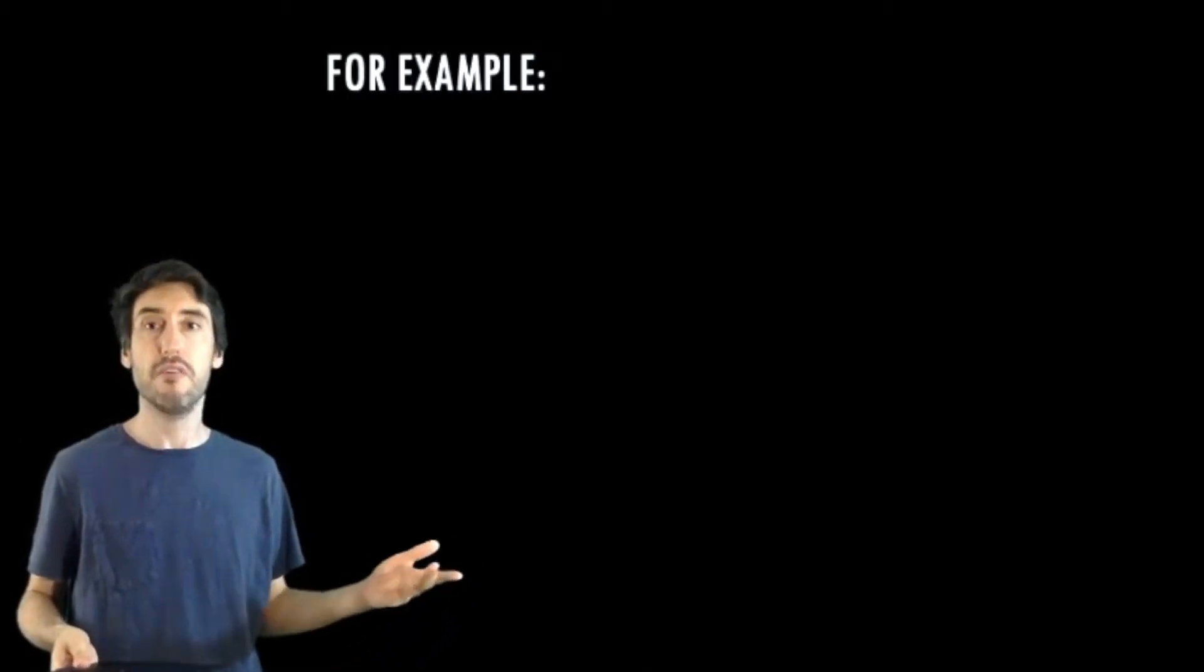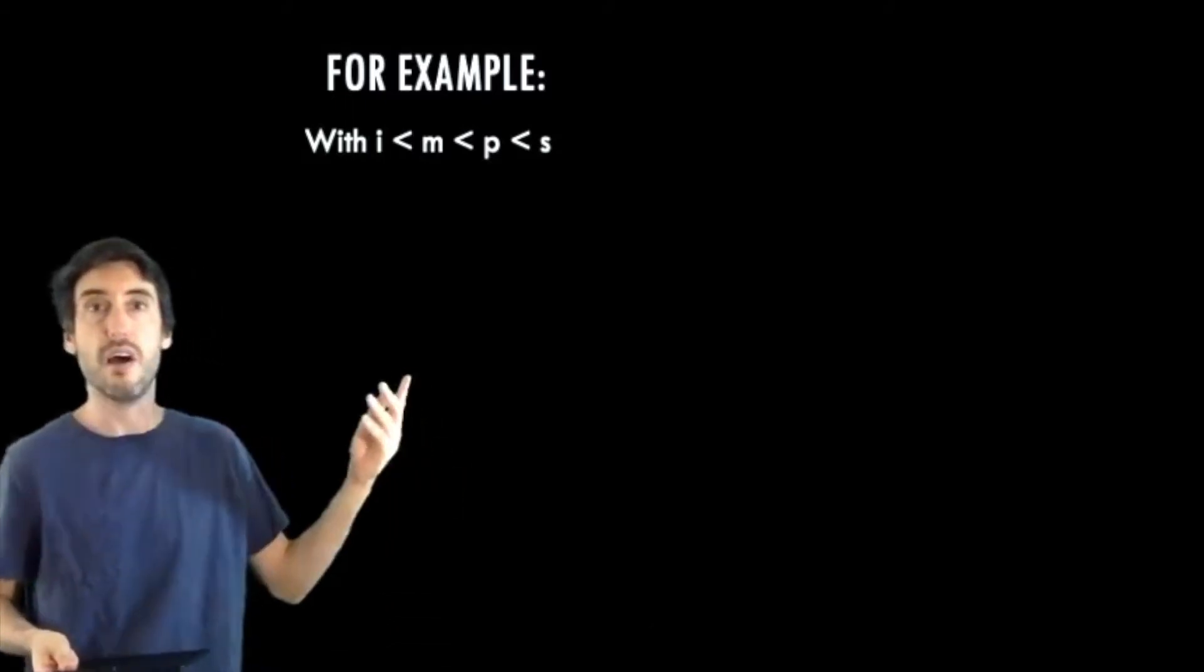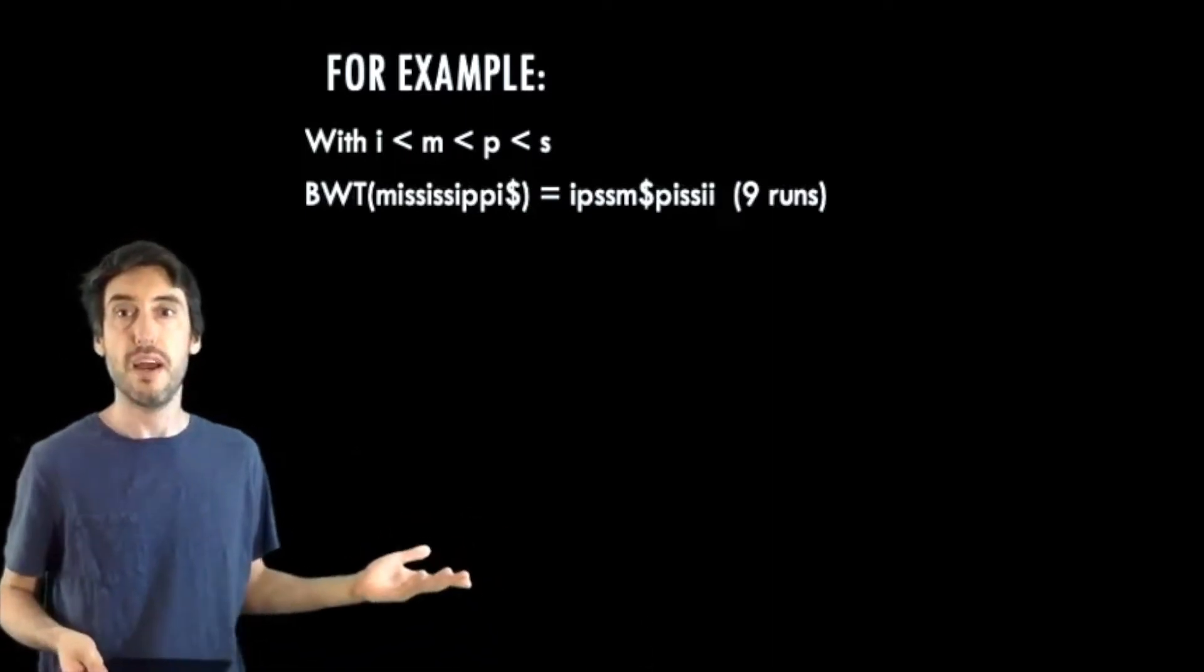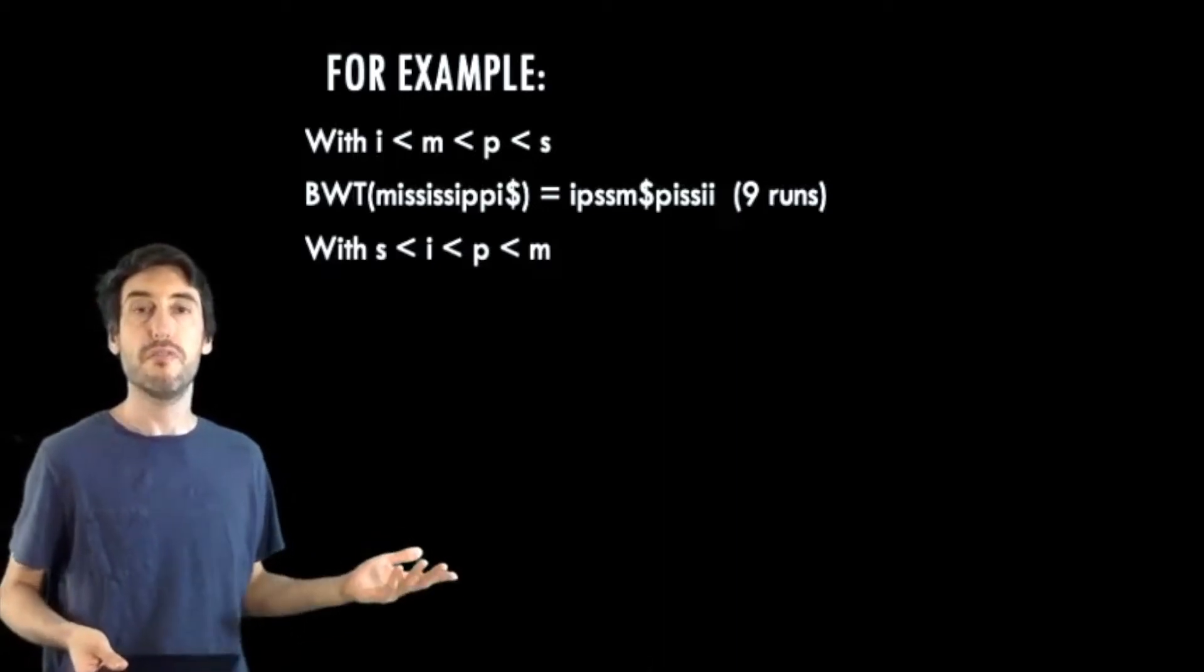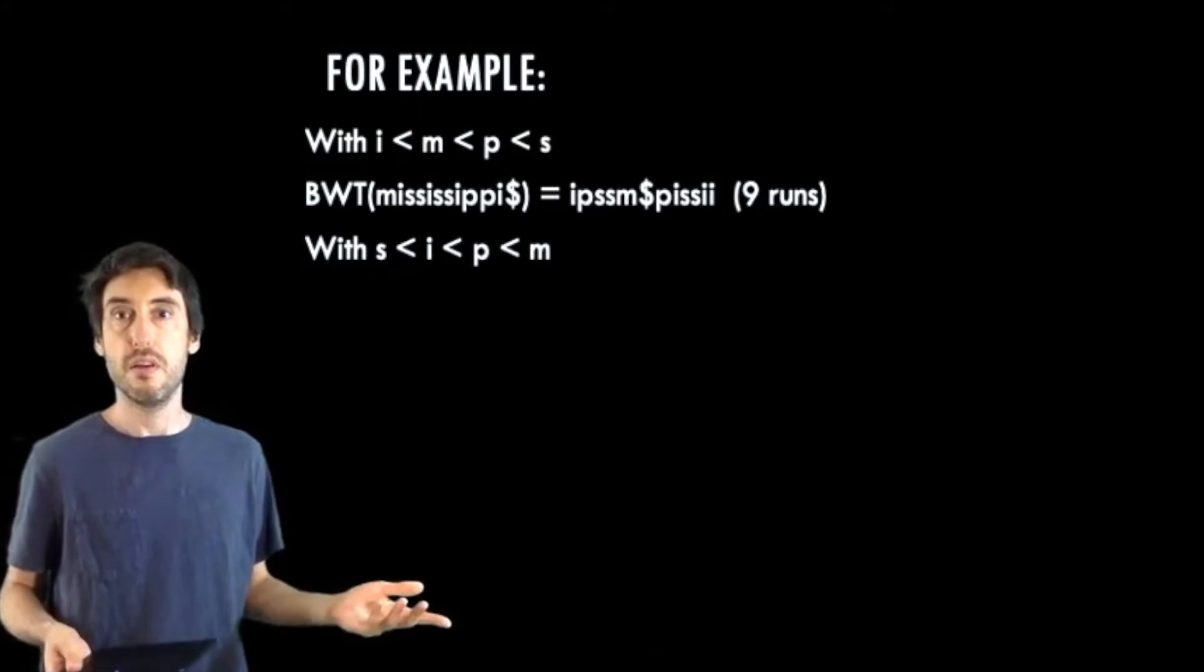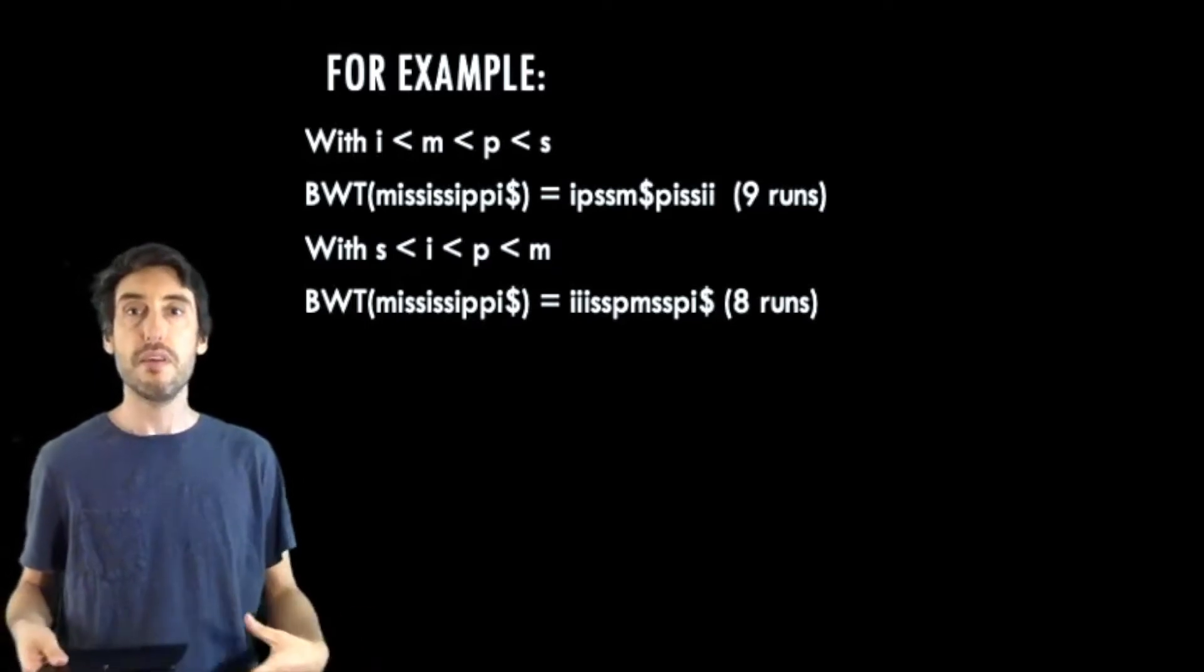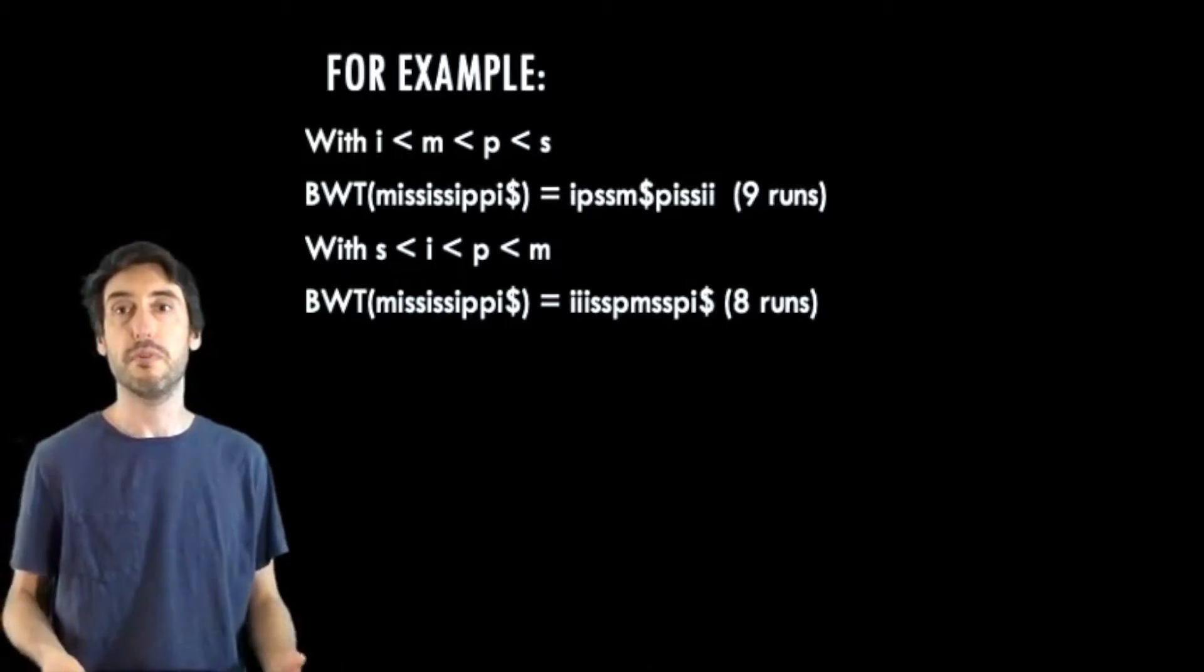So we can see this in a quick example. So maintaining the dollar sign as a small symbol in the ordering, if we order the symbols as i less than m less than p less than s, we obtain the BWT shown in the earlier slide, which has a total of nine runs. If, however, we order the symbols as s less than i less than p less than m, then we obtain this BWT, which now has eight runs. Now you might be thinking that nine runs to eight runs, not a significant difference. Well this is just a small example though.